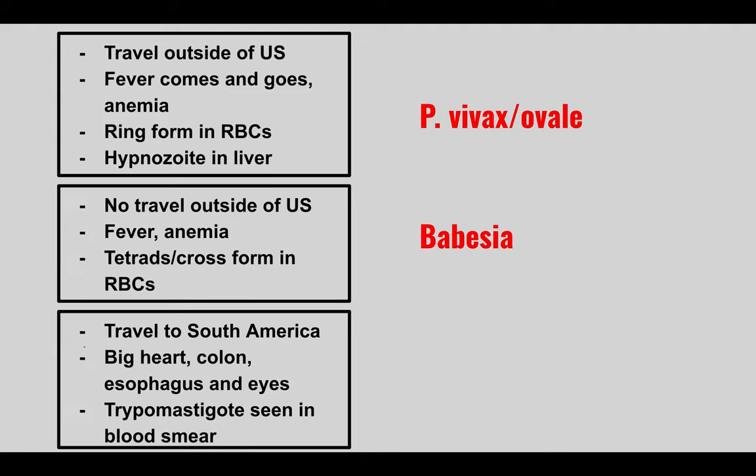The next patient has a travel history to South America, a big heart, a big colon, a big esophagus, swollen eyes, and trypomastigotes seen in blood smear. This is T. cruzi, which causes Chagas disease. Look out for megacolon, mega-esophagus, and dilated heart. The swollen eyes are called Romaña's sign.